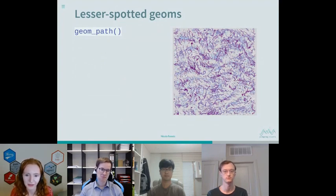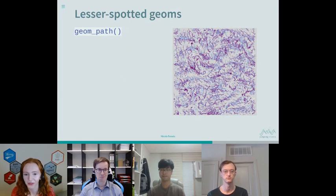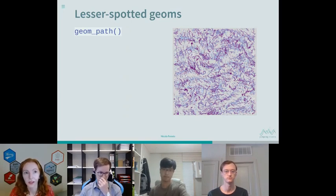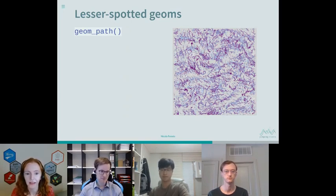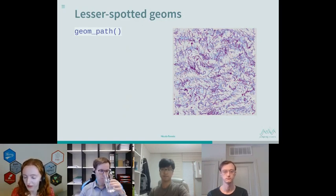Before I started doing generative art, I'd never really used geom_path. I'd been using its sister geom_line on an almost daily basis for displaying time series data. Where geom_line connects observations in order of the variable on the x-axis, geom_path connects those observations in the order in which they appear in the data.